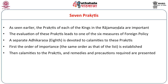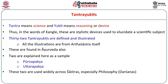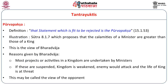A separate adhyaya is also devoted to calamities to these particular Prakritis. We will also briefly observe the Tantra Yuktis — these are the stylistic devices of explaining or elucidating a scientific subject. Ayurveda and Arthashastra give 32 Tantra Yuktis. In Arthashastra, all Tantra Yuktis have examples given from the text itself. We will deal with two examples: Purvapaksha and Uttarapaksha, chosen because they are very popular across ancient Indian literature — not merely in statecraft but in philosophy as well.